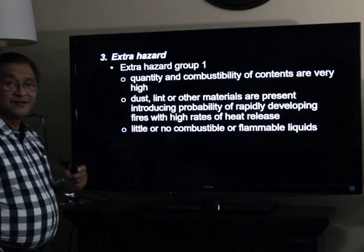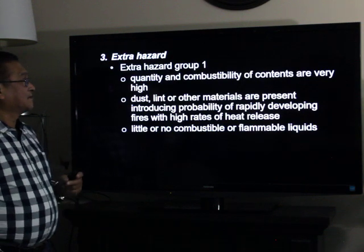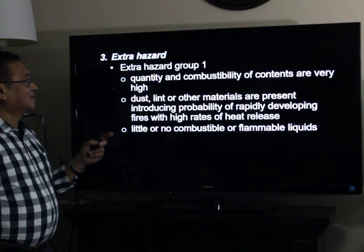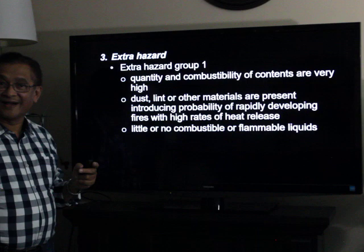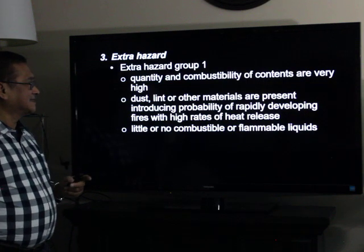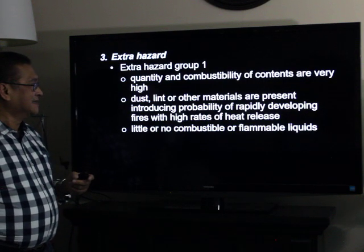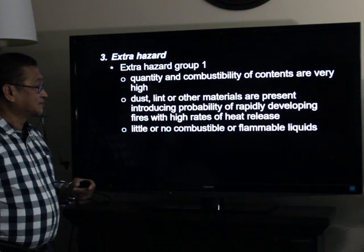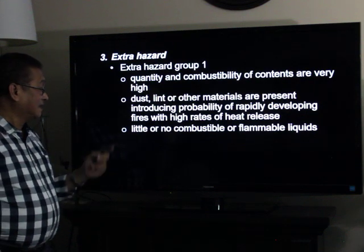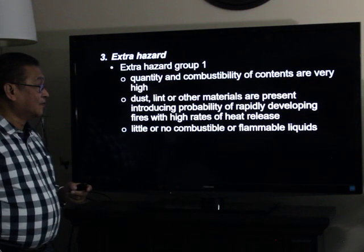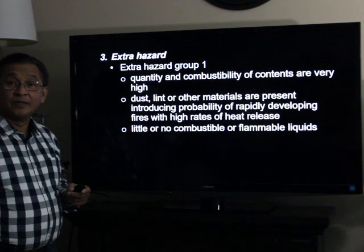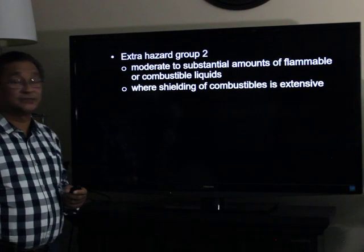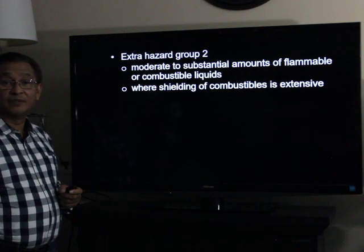Extra hazard also has two groups. Extra hazard group one: the quantity and combustibility of contents are very high; dust, lint, or other materials are present, introducing the probability of rapidly developing fires with high rates of heat release, and little or no combustible or flammable liquids. Extra hazard group two: moderate to substantial amounts of flammable or combustible liquids, and shielding of combustibles is extensive.